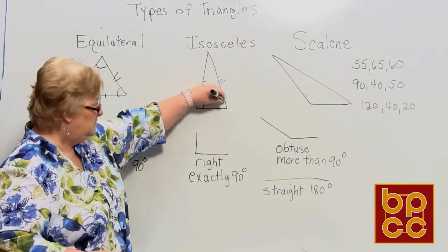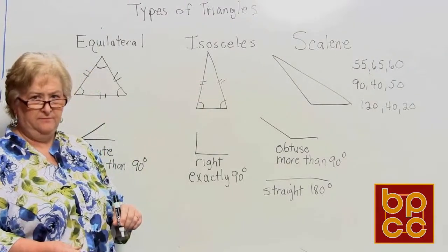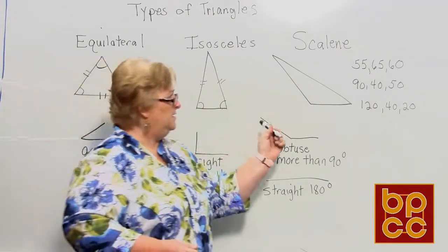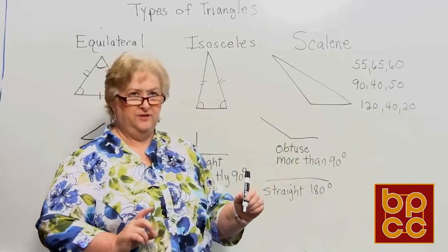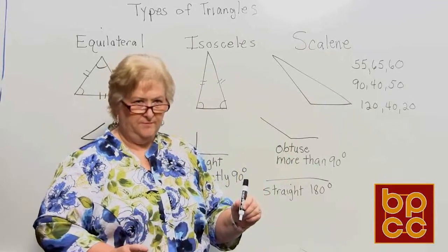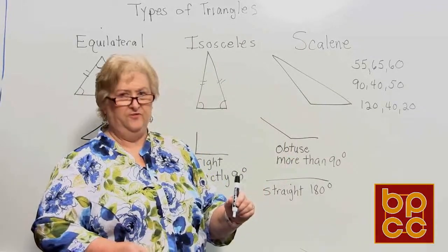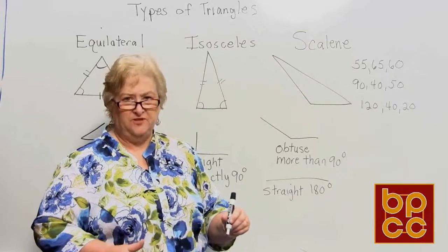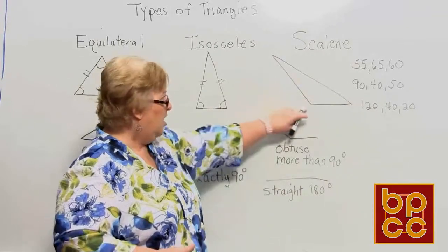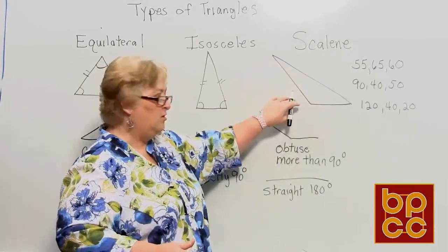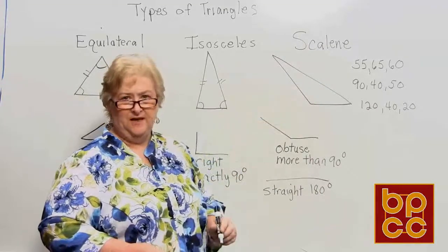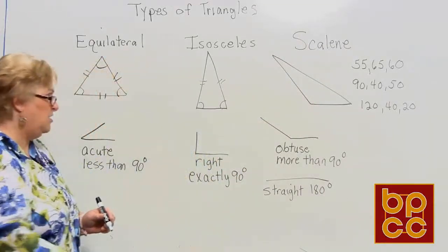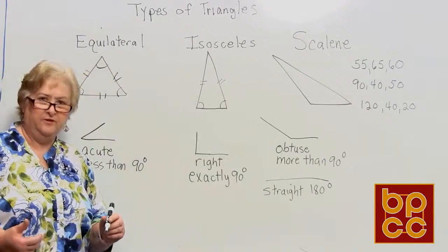Isosceles means that two sides are the same and two angles are the same. Scalene is a very different one — all sides are different, all angles are different, so all lengths of the sides are different.